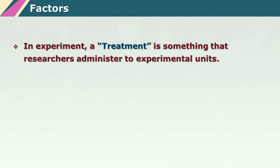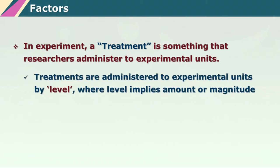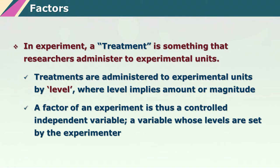A very important term in any experimental design is a factor. The term factorial design actually comes from the word factor. Every factor or treatment that the experimenter brings to the table is usually presented at a number of different levels. Each level represents a magnitude to which that particular factor is administered to the subjects.